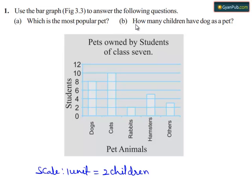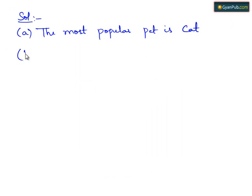Now moving to the second part, how many children have dog as a pet? Referring to the bar graph, the length of the bar graph corresponding to dogs is eight children. So eight children have dog as a pet.